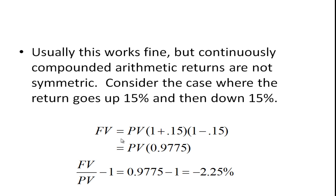Here we can divide both sides by PV and then subtract one from both sides. So you would have FV over PV equals 0.9775, and if we subtract one from both sides, this gives us a rate of return of minus 2.25 percent, which seems odd. You go up 15 percent, you go down 15 percent, shouldn't it be zero? But it's not based on this compounded arithmetic return.